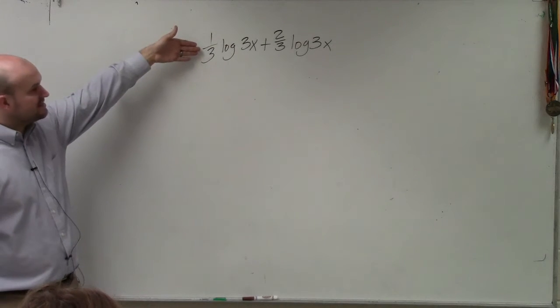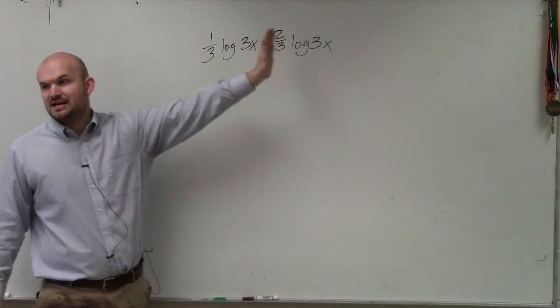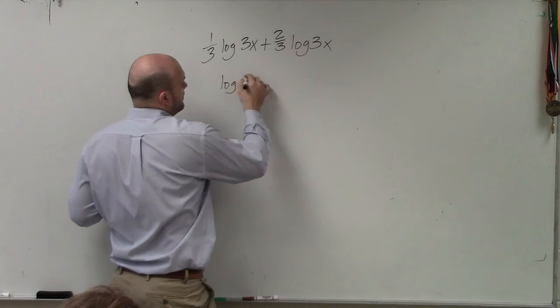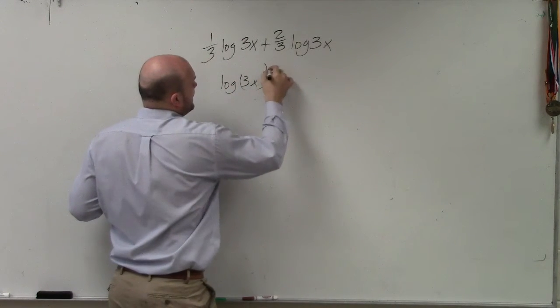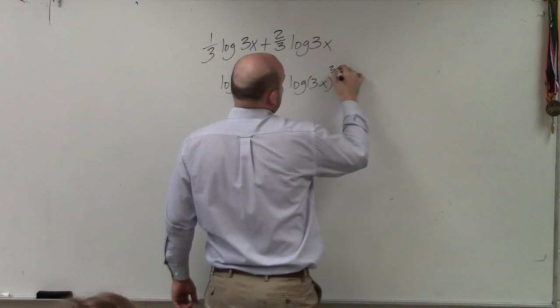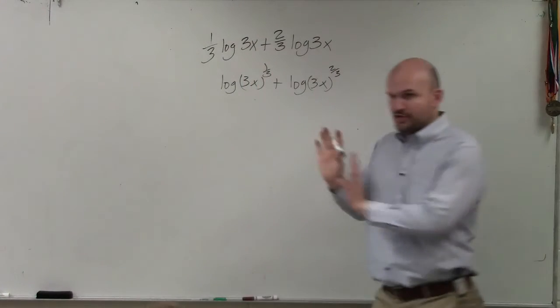The first thing is I can see that I have these values in front of my logarithm. I can rewrite these as the powers. So I can rewrite this as log of 3x raised to the 1/3 plus log 3x raised to the 2/3. Does everybody agree with me?